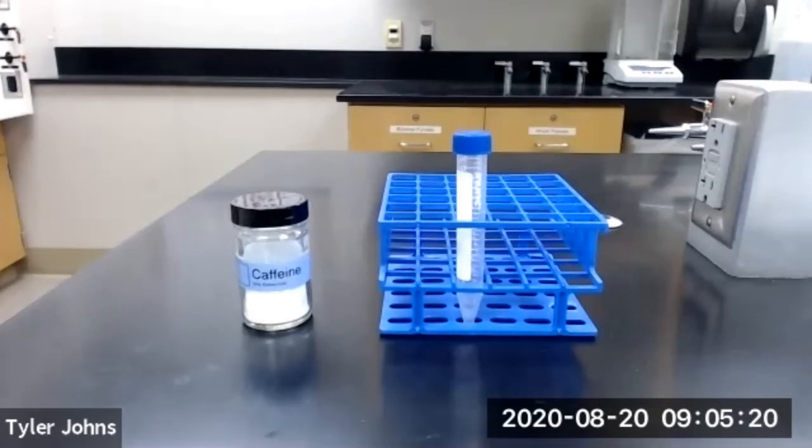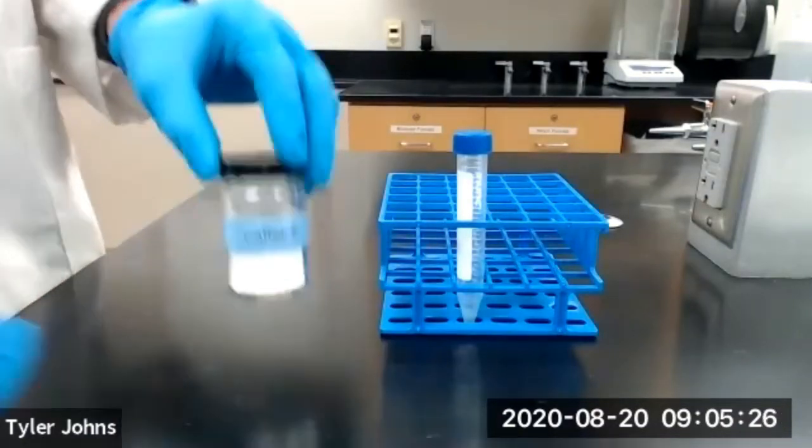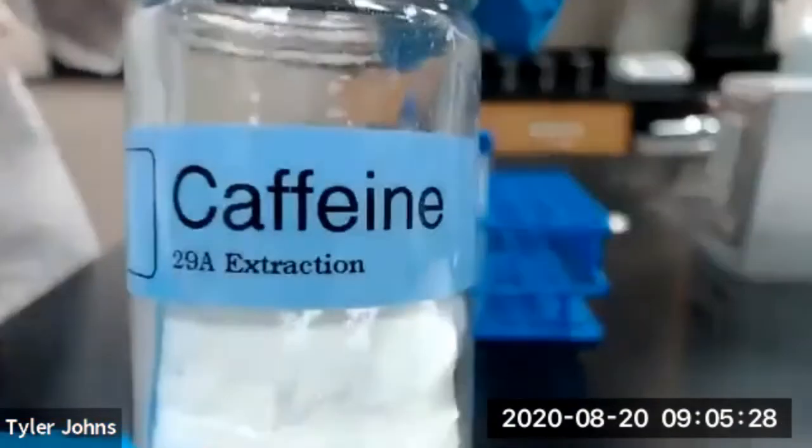In part A of this experiment, we're going to be performing an extraction of caffeine using methylene chloride. We first need to add approximately 70 milligrams of caffeine to a screw cap centrifuge tube.